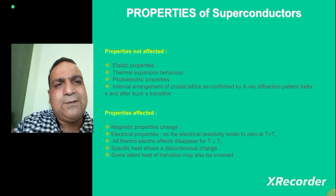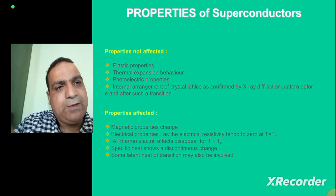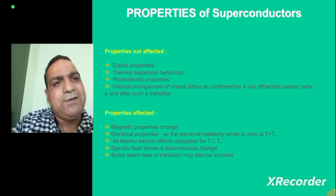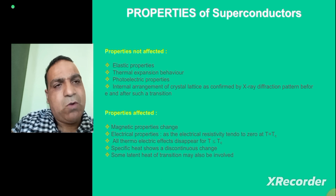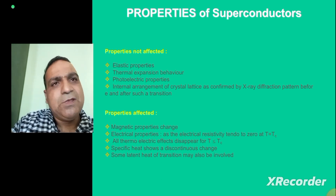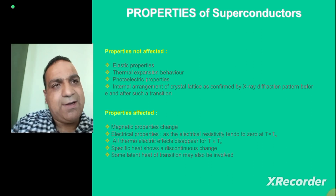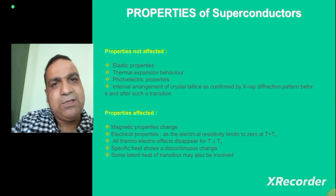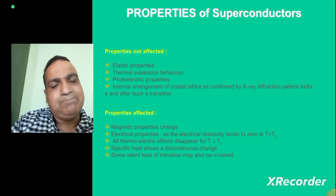It is quite obvious from the graph that when we observe the behavior of mercury in terms of resistance and temperature, there is a phase transition. At some point of temperature, this material shows a transition from the normal state to the superconducting state. The atoms of the material are the same — all you are doing is basically taking your system to very, very low temperatures.